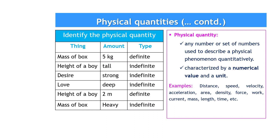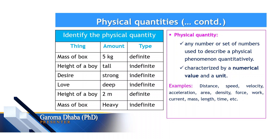Such types are called indefinite quantities. But if we say the height is two meters, this is exactly known — definite. If the mass of the box is described as 'heavy', we don't know how many kilograms it is. So quantities can be definite or indefinite, and you should be in a position to identify which is which.